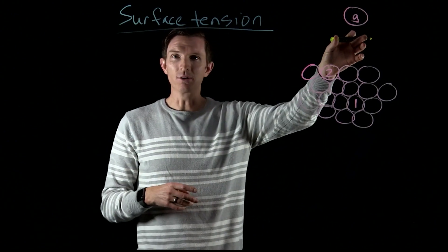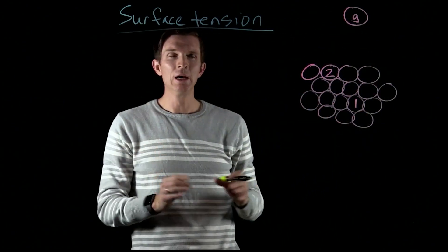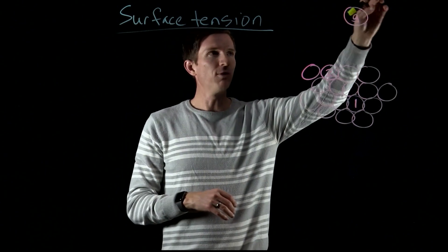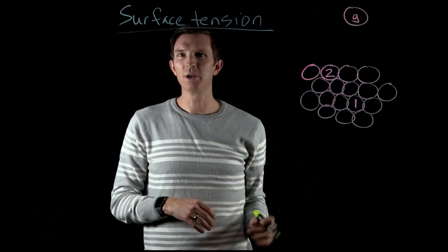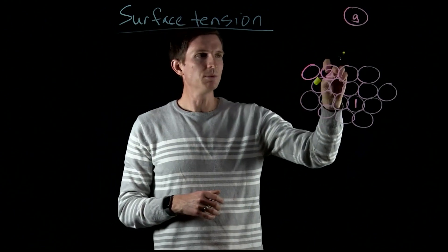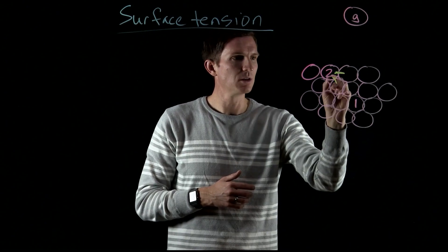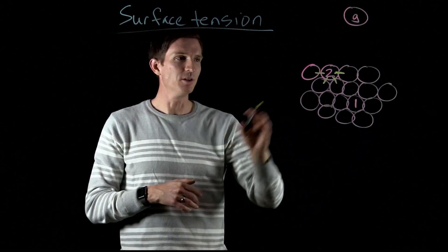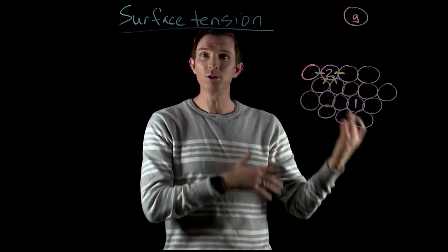Looking at a gas particle, it has no attractions, nothing around it. If we were to think about this gas particle coming to sit in the place where molecule number two is, when it comes and sits there, it forms attractions between the molecules around it. In this case, particle two has four attractions.